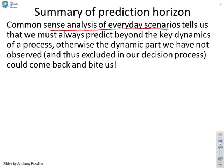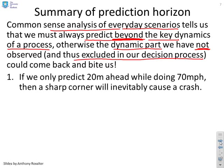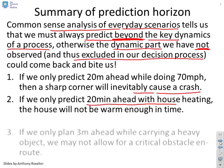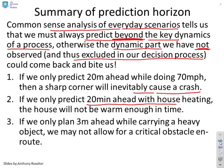Common sense analysis of everyday scenarios tells us we must always predict beyond the key dynamics of a process. Because if we don't, the dynamics we have not observed — and thus excluded from our decision process — are the very dynamics which could give us an outcome we didn't want. For example: if you only predicted 20 metres ahead while driving at 70 miles an hour and there was a sharp corner 20 metres ahead, you're going to crash. If you only predict 20 minutes ahead when heating a house, the house will not be warm enough in time, since houses typically take one and a half to three hours to warm up. If we only plan three metres ahead while carrying a heavy object, we may not allow for a critical obstacle en route.